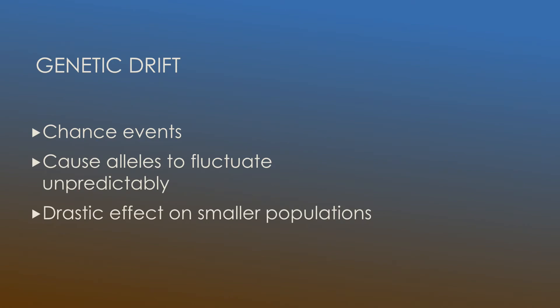Genetic drift includes chance events that cause alleles to fluctuate unpredictably. Alleles are the genetic variation in a population. Genetic drift has drastic effects on smaller populations, as opposed to larger populations which are more likely to withstand the effects. That doesn't mean larger populations will not experience genetic drift — any population will always be experiencing genetic drift. However, smaller populations are the ones that will feel it the most.